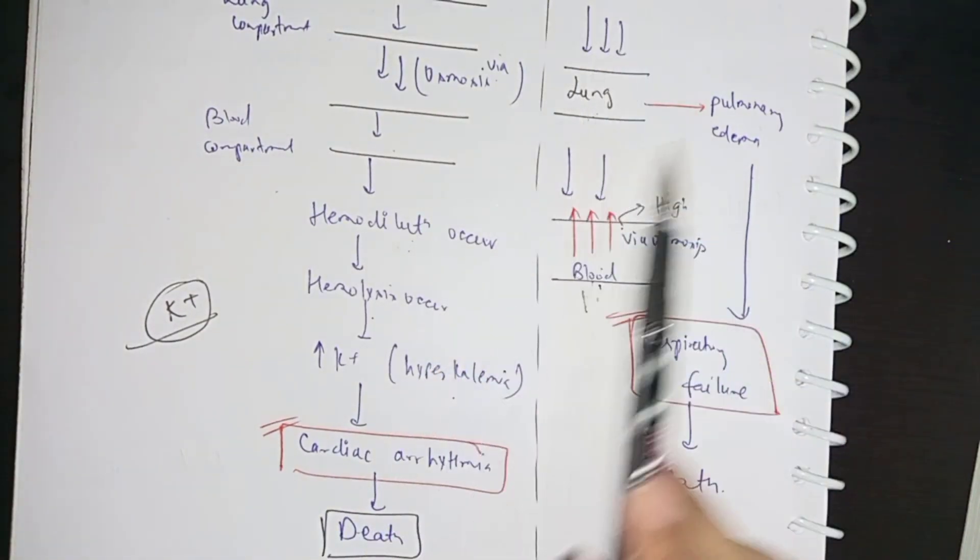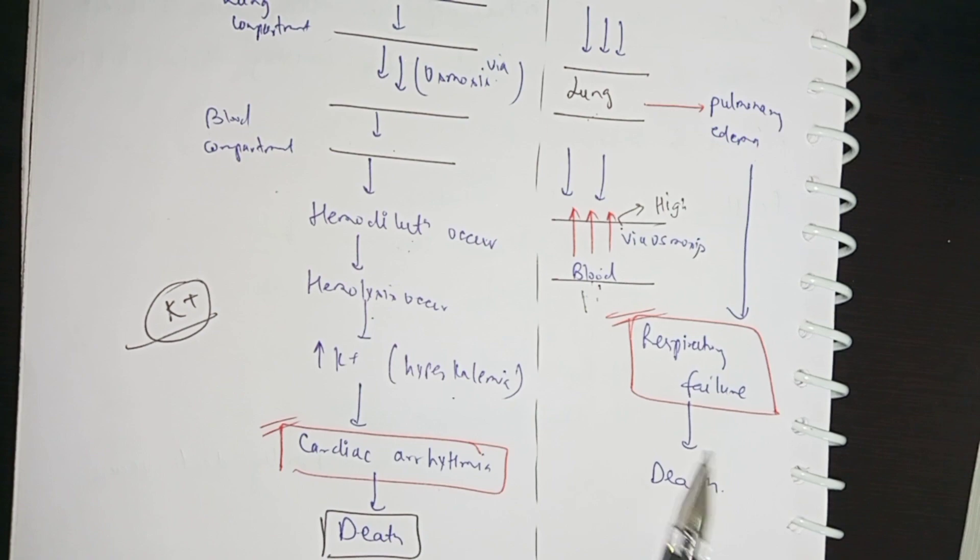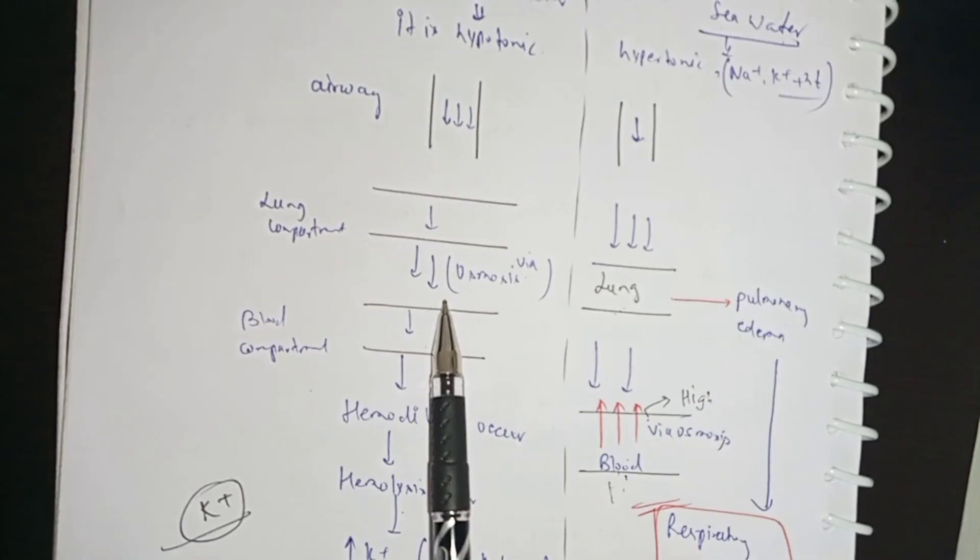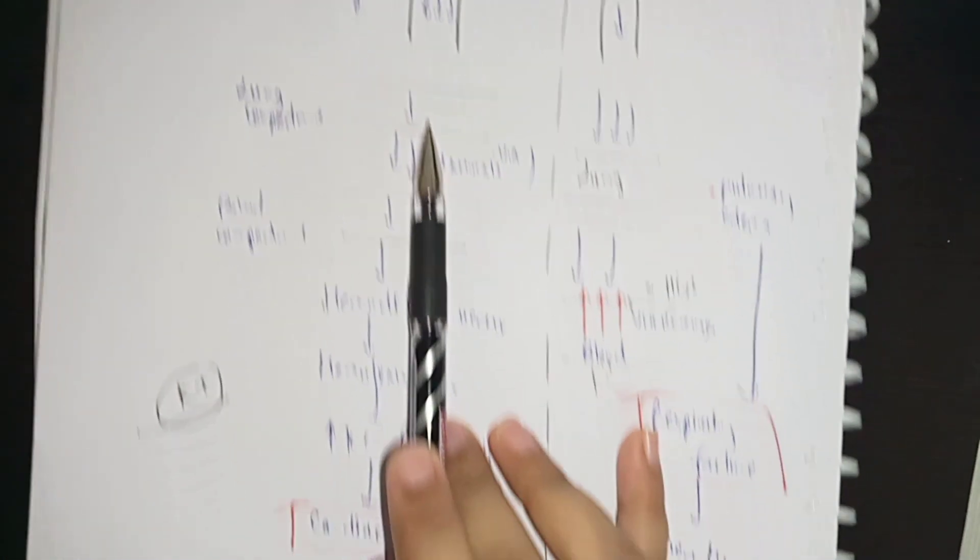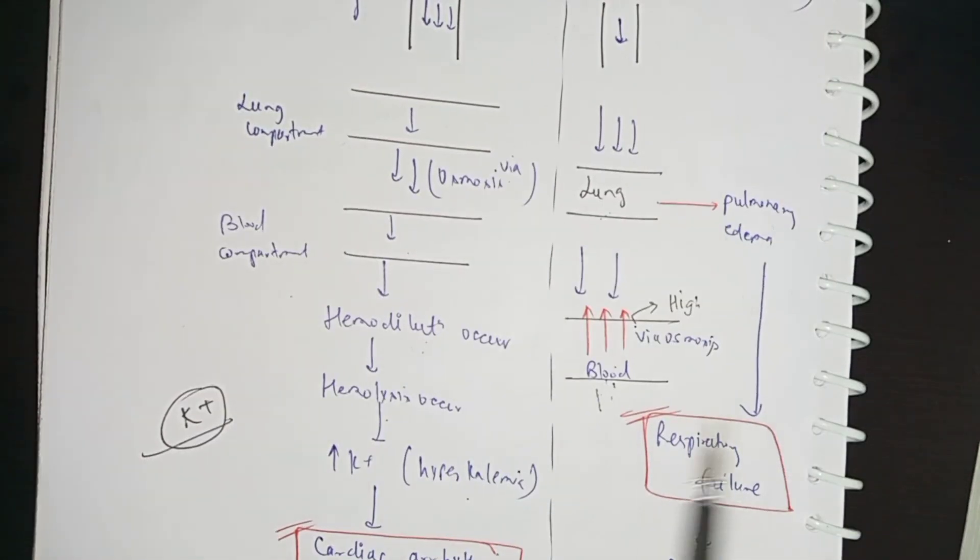So this will be your pathfall. Fresh water will cause cardiac arrhythmia, while the seawater death cause is respiratory failure.